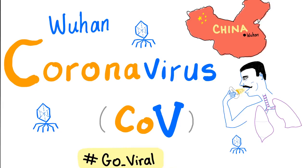Hey, it's Medicosis Perfectionals, where medicine makes perfect sense. Today, we'll talk about coronavirus. It's not just one virus — they are a group of viruses. A more accurate term is coronaviridae, which is a group of viruses. We'll talk about it, and briefly about the new coronavirus discovered in Wuhan, China.